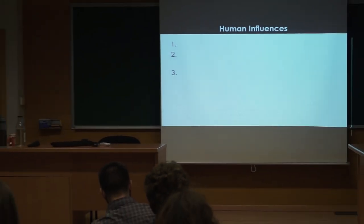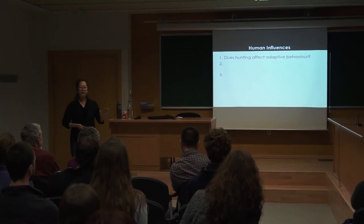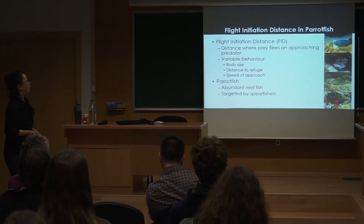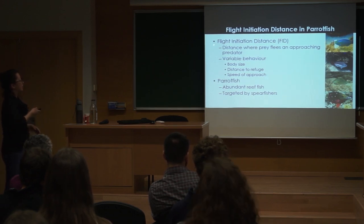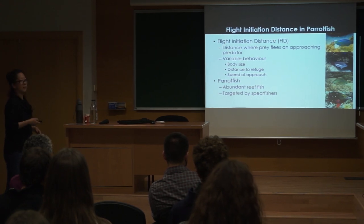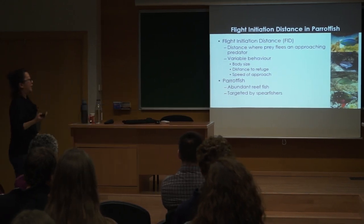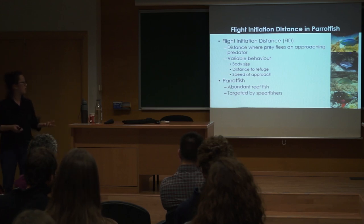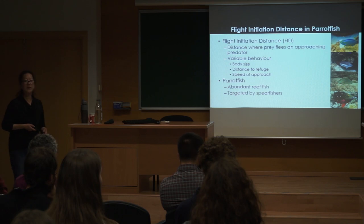Today I'm going to focus on three questions. The first is very straightforward: does hunting affect adaptive behavior? The hunting I'm going to discuss is spearfishing. What's great about spearfishing and adaptive behavior is that we can look at it in relation to different variables. The metric I measured is flight initiation distance — the distance at which a prey flees an approaching predator. It's a variable behavior known to vary in relation to things such as body size, distance to refuge, and speed of approach.